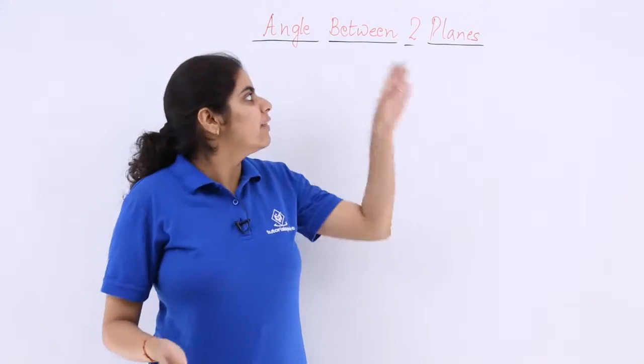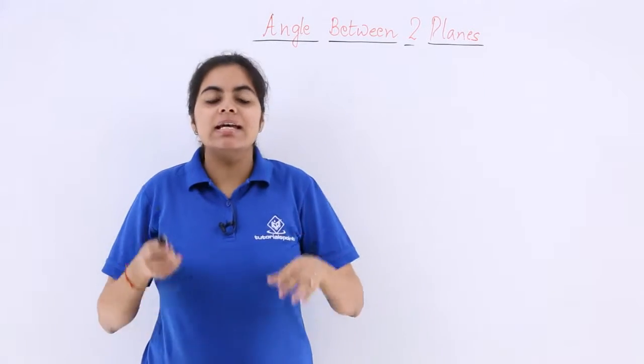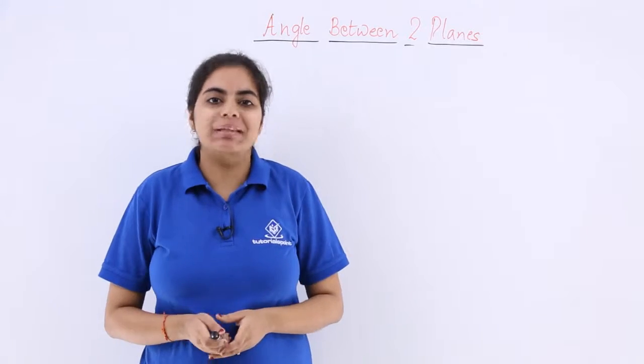What should be the angle between two planes? The angle between two planes is actually the angle between their normals.